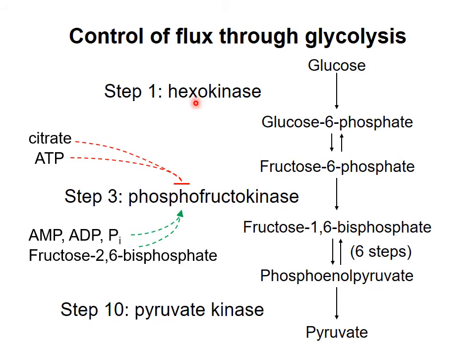Hexokinase and pyruvate kinase are regulated according to similar logic. When glucose is abundant or ATP is needed, the pathway is activated, but when ATP is not needed, the pathway is inhibited.